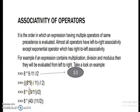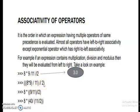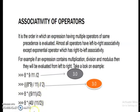See the next example. Here you can see the parenthesis. Parenthesis has the highest precedence, so what is given inside the parenthesis will evaluate first. So 8 times 9 gives 72, then 72 divided by 11 gives 6.6, then floor division by 2 gives the answer 3.0.